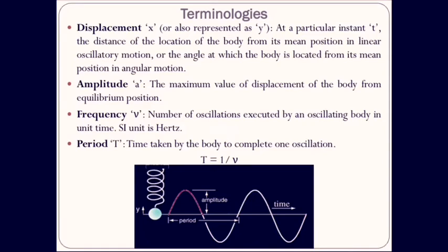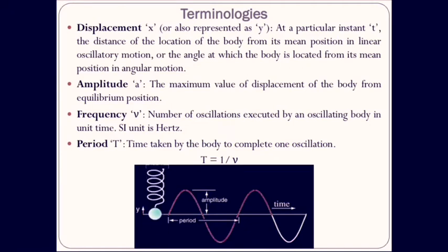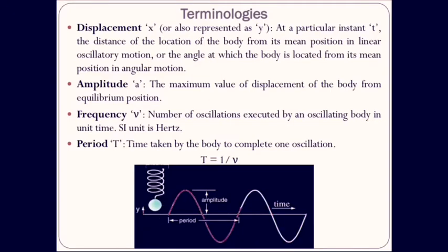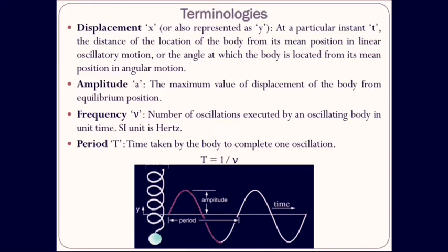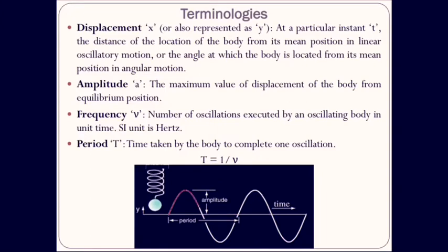Next is frequency — the number of oscillations executed by an oscillating body in unit time. The unit for frequency is hertz. Next term is period: the time taken by the body to complete one oscillation. For example, starting from the mean position, the bob going up, coming down, and going back to the mean position is one complete oscillation. The relation between frequency and period is given by T equals 1 over nu, where nu is the frequency.